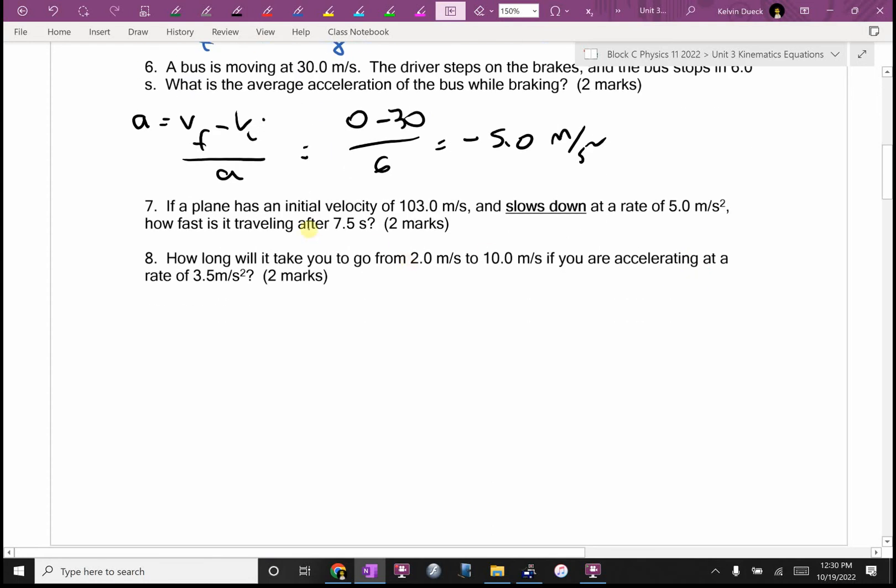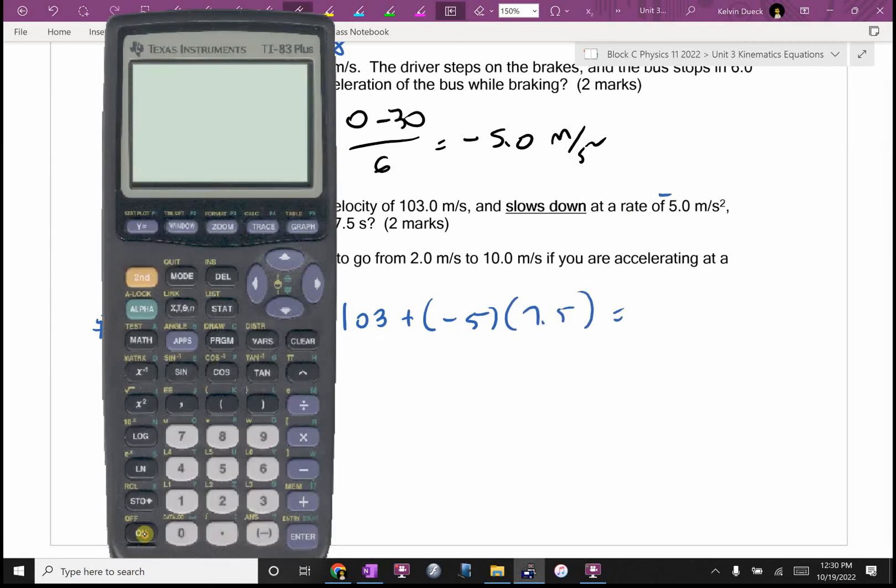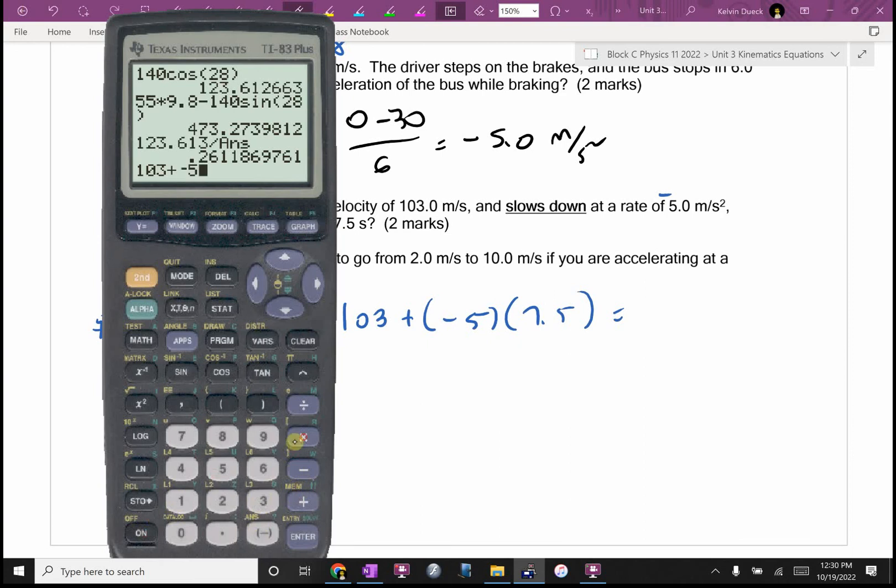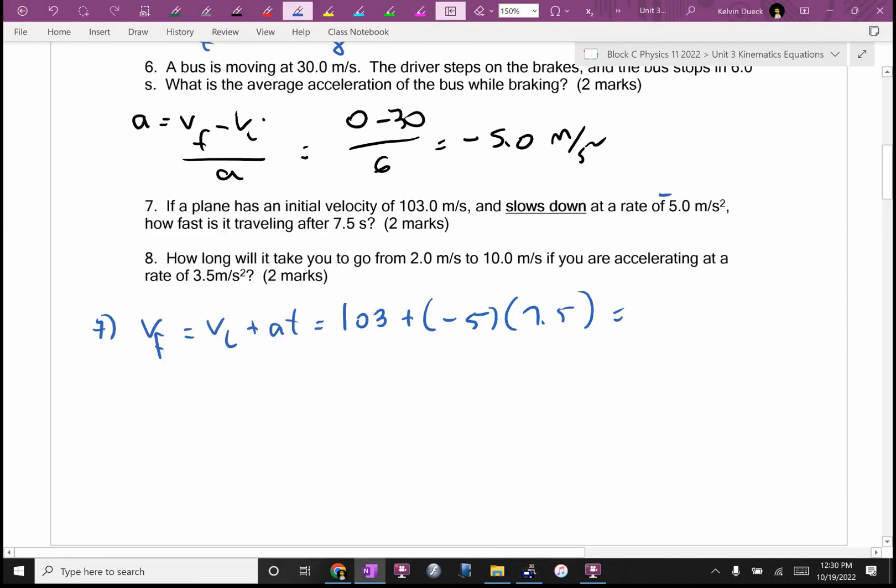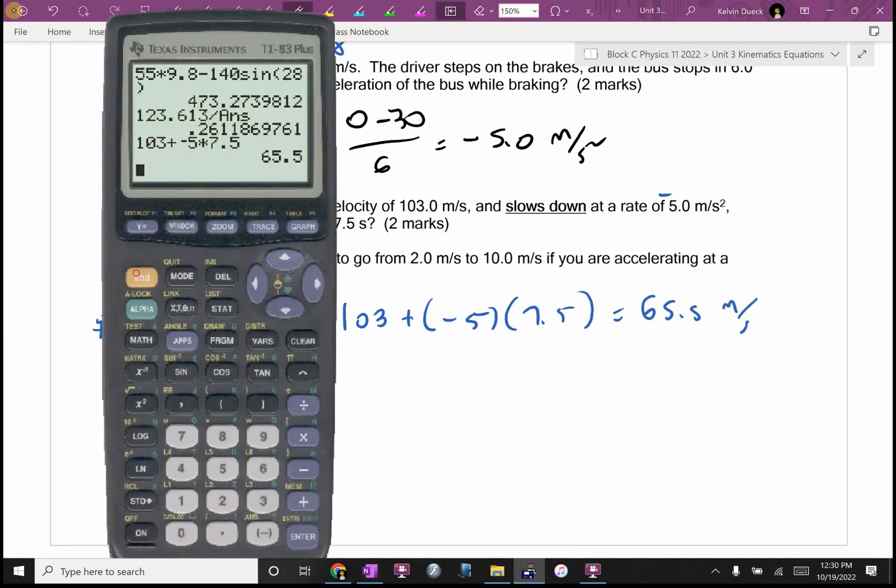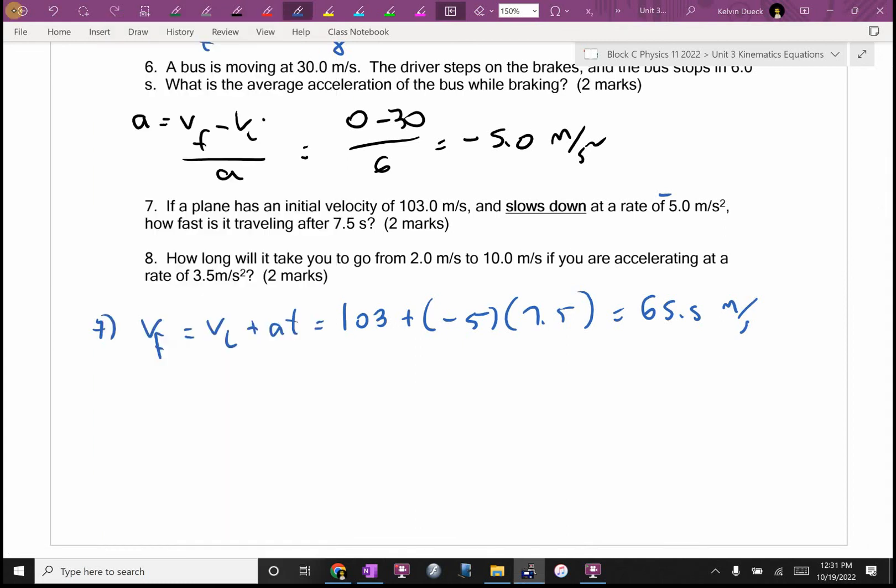Number seven, I don't know why there's no space there. I'm going to do number seven right here. It wants me to find VF, and I'm going to go VI plus AT, where VI is 103 plus negative five. I did put a negative right there because I saw slows down. 103 plus negative five times 7.5. 65.5. If you missed the negative, I would give you one out of two.